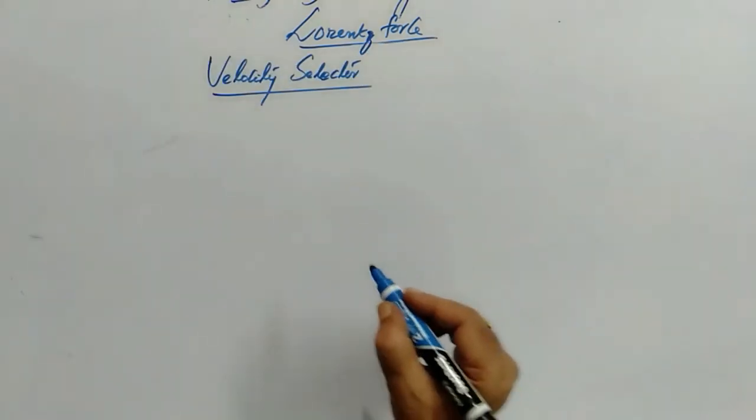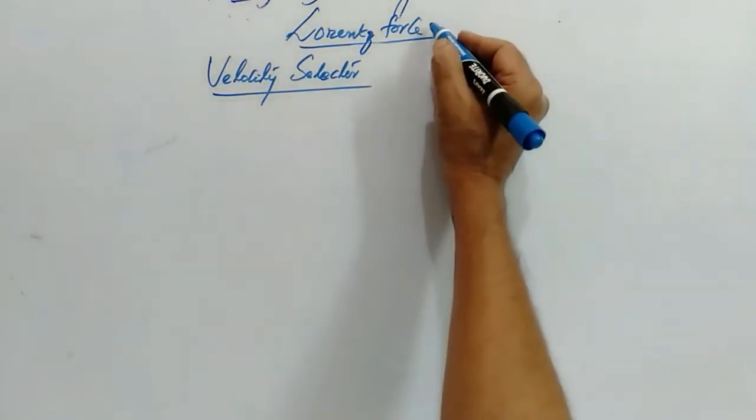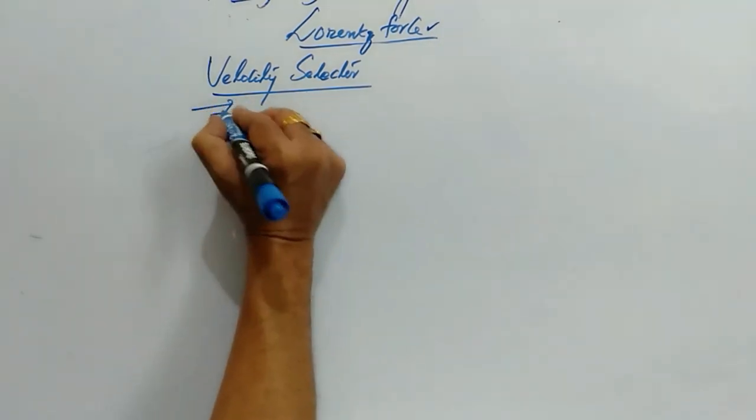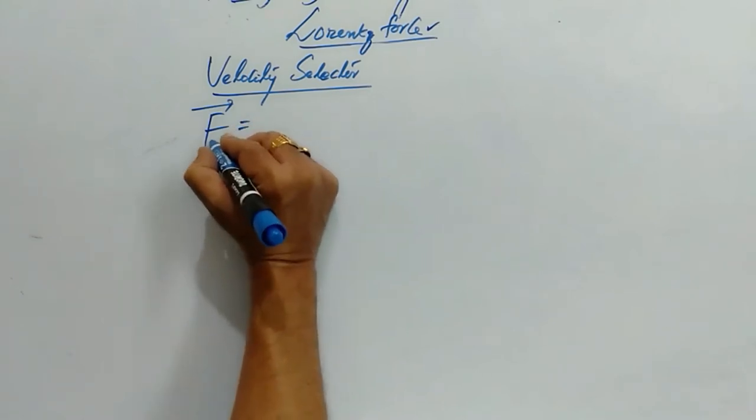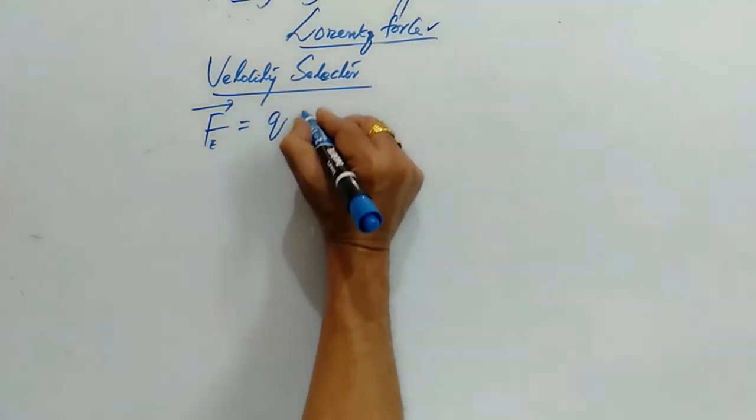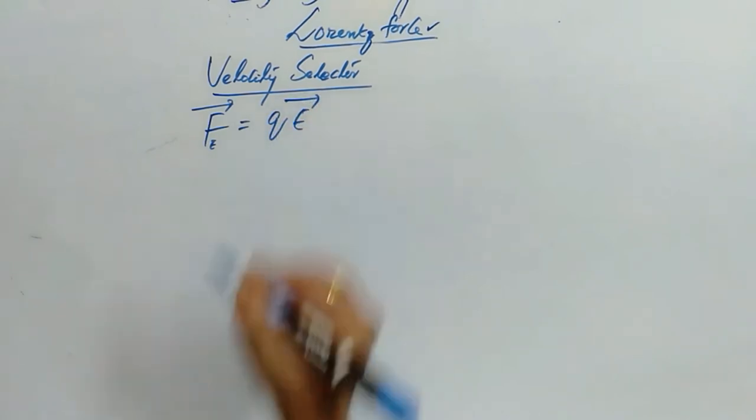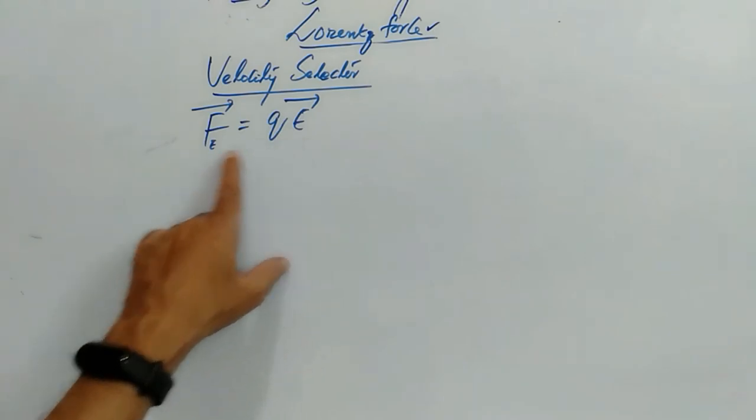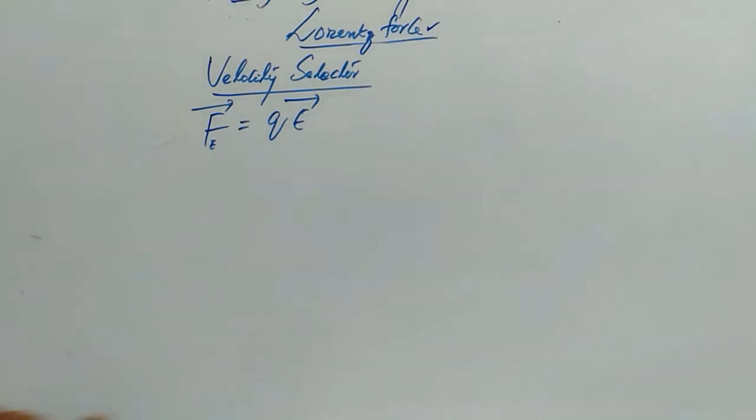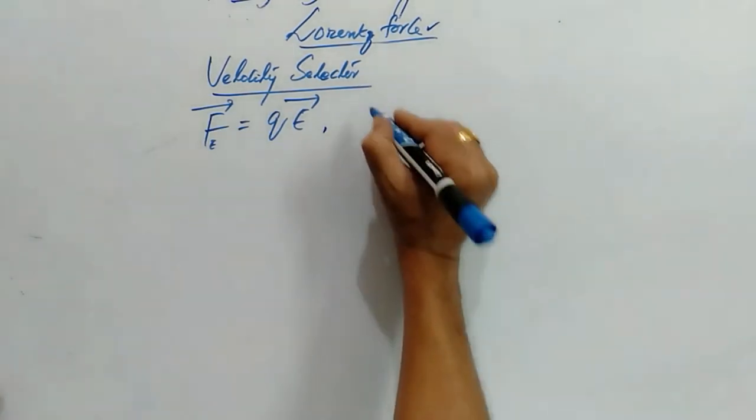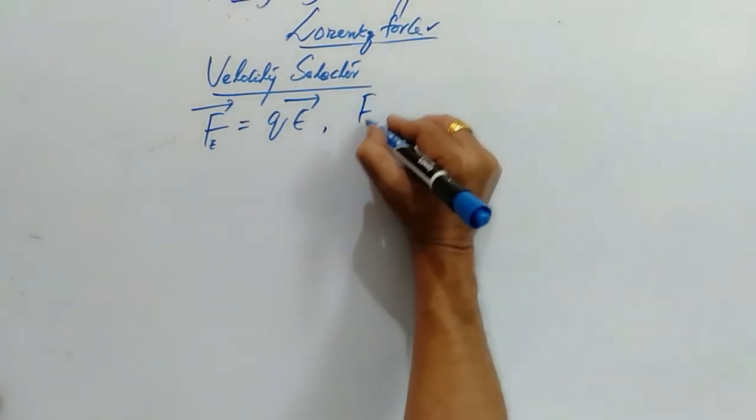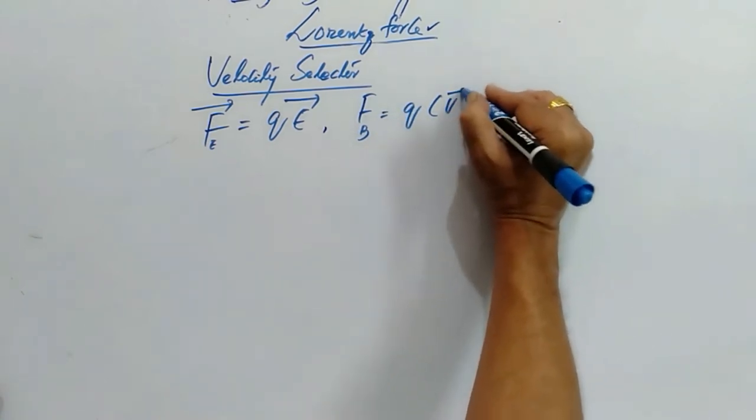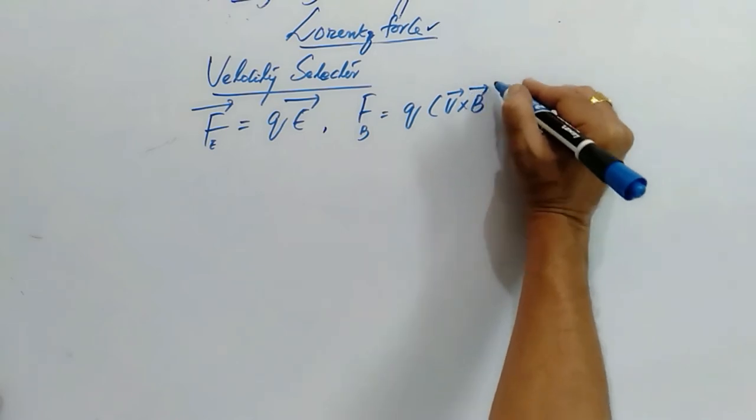Let's talk about velocity selector. So velocity selector works on Lorentz force. We know that Lorentz force equation for electric field is q times electric field. The force experienced by the charged particle in presence of electric field is F equals QE. Now if you take the magnetic field then F equals QV cross B.